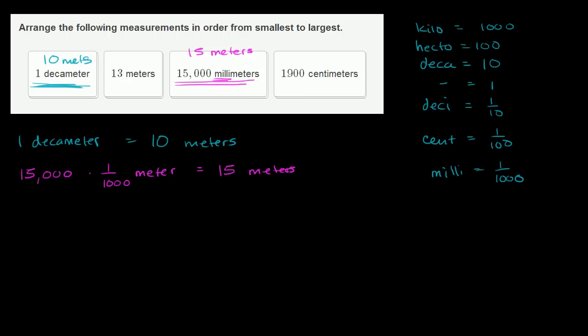Finally, we have 1,900 centimeters. Instead of writing centi, I'll write one-hundredth of a meter. 1,900 times 1 over 100 is 19, so this equals 19 meters. Another way: this is 19 groups of 100 centimeters, and 100 centimeters equals a meter.